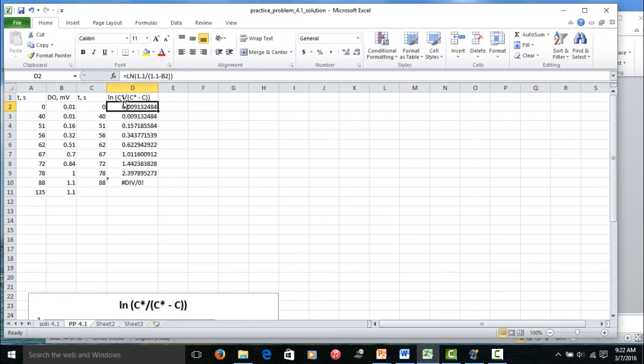So, the dissolved oxygen concentration as directly proportional to the millivolt value here, the constant of proportionality does not matter. So, 1.1 is taken as this. If you look at the formula here, natural log of 1.1 divided by in the denominator 1.1 minus the DO value in terms of millivolts. That is the way this is calculated. And these are assigned to the same times that are given here.